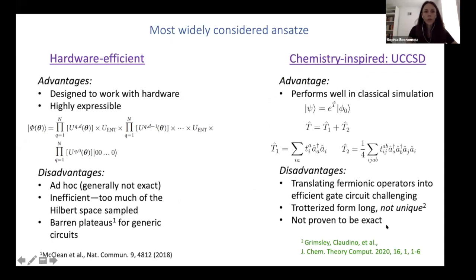So some ansatz that have been considered by the community, there are others. So I just chose the ones that I believe are most common, are something called hardware efficient ansatz where you basically take whatever your native gates are. And typically you have some entangler here, which is not parameterized, and you have some single qubit gates that are parameterized and you just alternate them. So this is by design compatible with the hardware, so it should perform well in that respect.